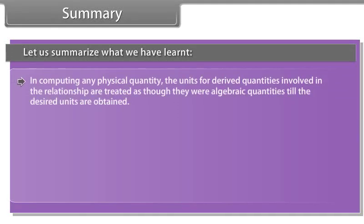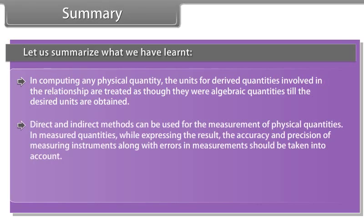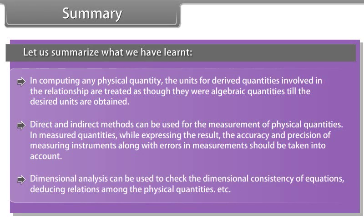In computing any physical quantity, the units for derived quantities involved in the relationship are treated as though they were algebraic quantities till the desired units are obtained. Direct and indirect methods can be used for the measurement of physical quantities. In measured quantities, while expressing the result, the accuracy and precision of measuring instruments along with errors in measurement should be taken into account. Dimensional analysis can be used to check the dimensional consistency of equations, deducing relations among the physical quantities, etc.